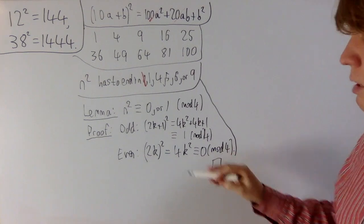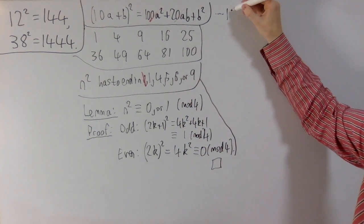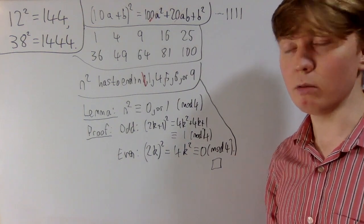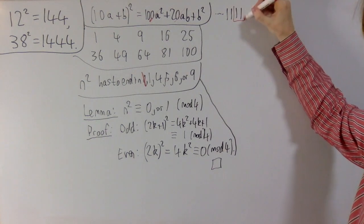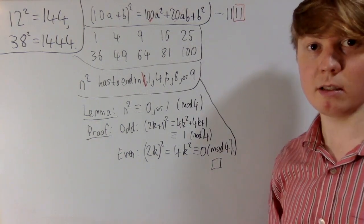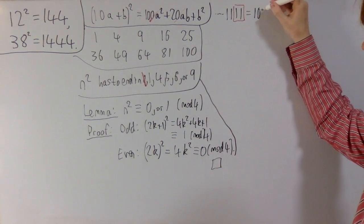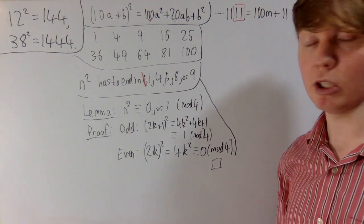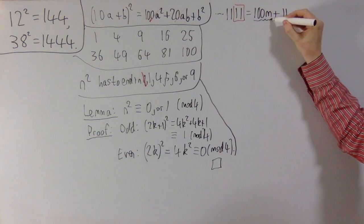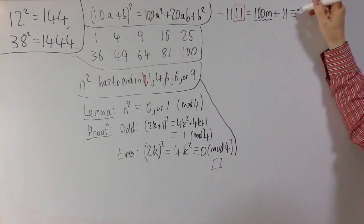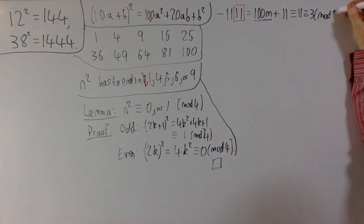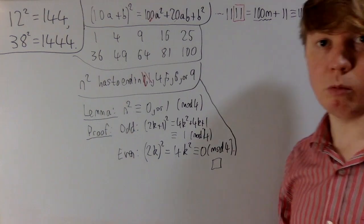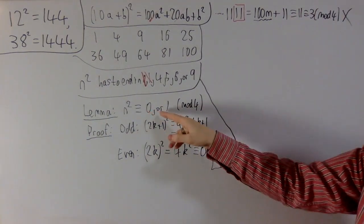Let's use this lemma to rule out cases. If a square number ends in four 1s, we can write it as 100m + 11. Since 100 is a multiple of 4, this is equivalent to 11 ≡ 3 mod 4 — which is not 0 or 1, so we can rule out ending in 1111. For the case ending in 4444, we get 100m + 44, which is equivalent to 0 mod 4, so we can't rule it out yet.